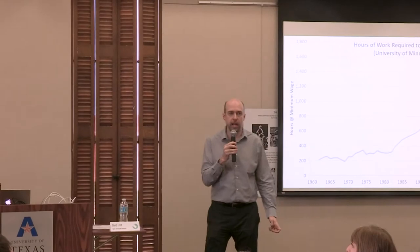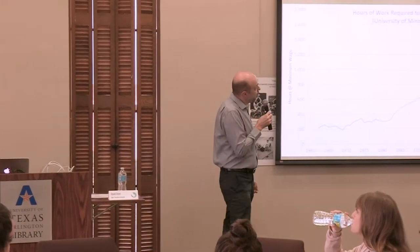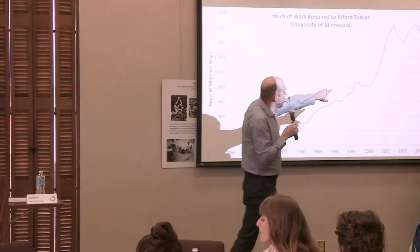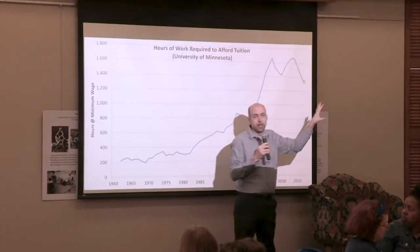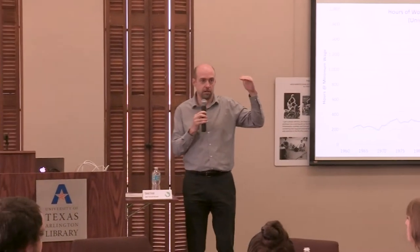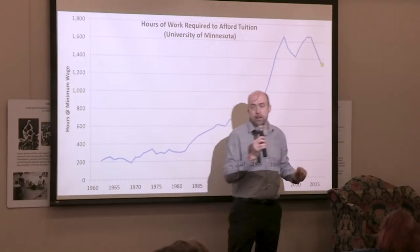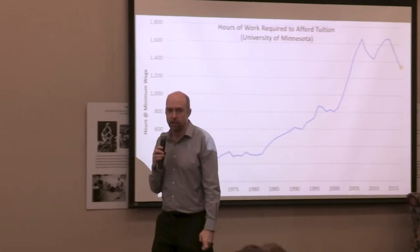Today, we're getting closer to a full-time job — 2,080 hours: 52 weeks, 40 hours a week. I just updated it and it has dropped a bit because the minimum wage in Minnesota went from $7.25 to $9.50. The minimum wage in Texas is $7.25, and your tuition is actually a bit lower than Minnesota's. That star on the chart shows where Texas is at, considering full-time in-state tuition and the minimum wage in Texas.